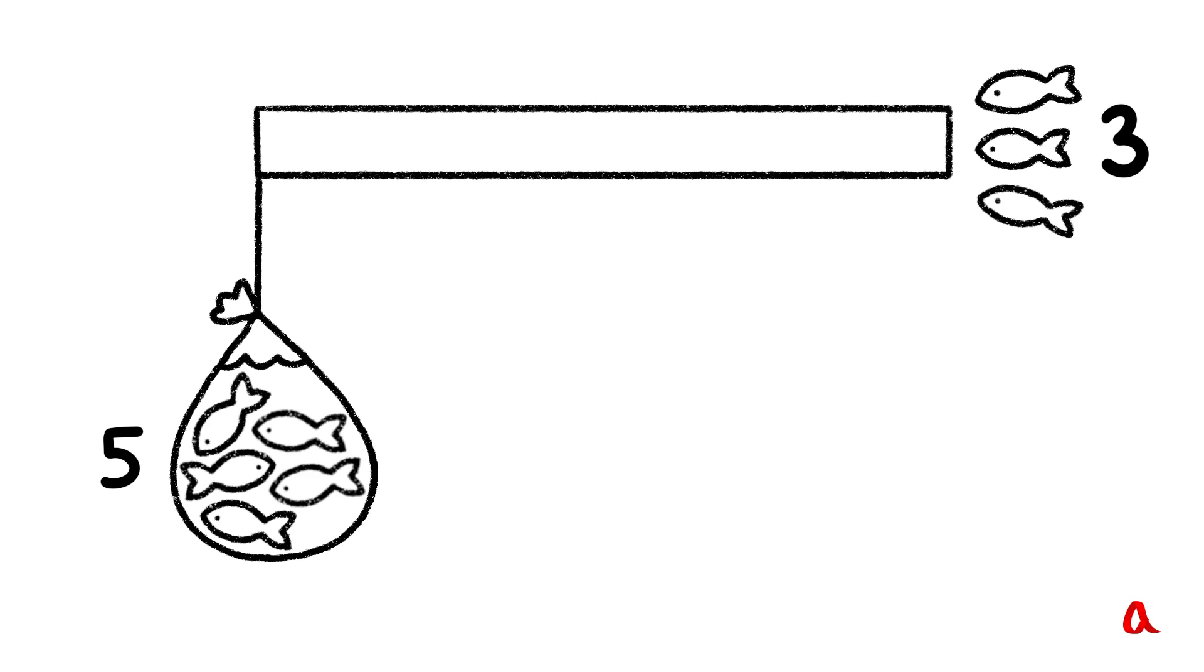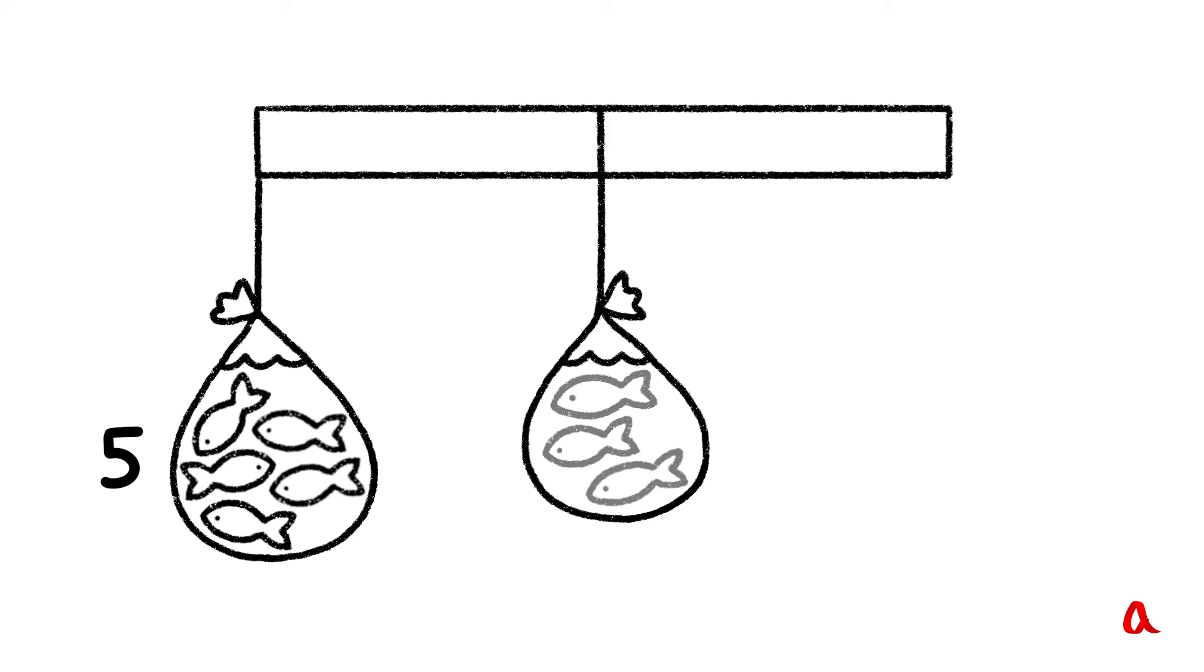Let's place the load equal to the beam's weight in its center. Now there are two loads weighing 5 and 3 units. It's clear that these loads' arms will have a 3 to 5 ratio. 3 plus 5 is 8.